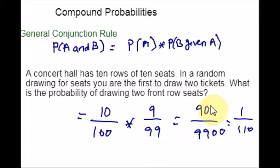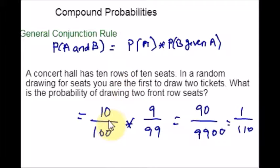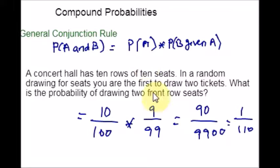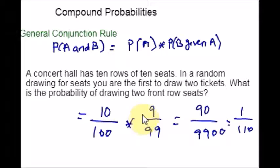This demonstrates finding the probability of the second event given that the previous event has already occurred. Now let us move on to the third rule: the restricted disjunction rule.